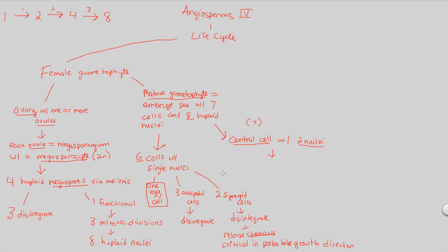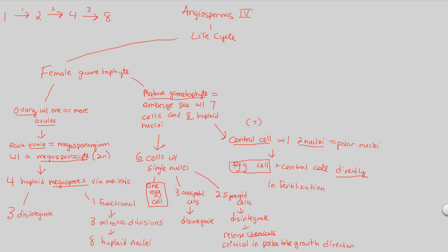The central cell is critically important. The two nuclei within it are referred to as polar nuclei. In this embryo sac structure we now have an egg cell and a central cell. This gives us effectively two egg cell structures involved in fertilization. These two egg cells plus the central cell are going to be directly involved in fertilization — specifically in the double fertilization event that we'll examine later.